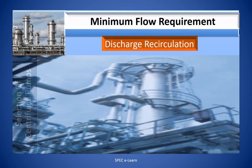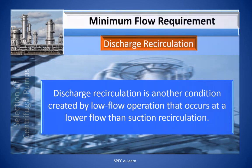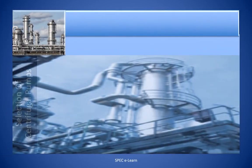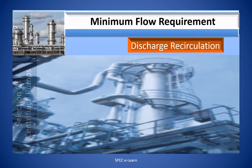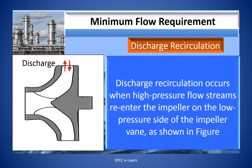Another problem at low flow is discharge recirculation, which is created by low flow operation occurring at a lower flow than suction recirculation. Discharge recirculation occurs when high-pressure flow streams re-enter the impeller on the low-pressure side of the impeller vanes. The reverse flow within the impeller passage shears across outgoing flow, producing vortices along the pressure wall and causing cavitation along the pressure wall and shrouds adjacent to the impeller outlet.